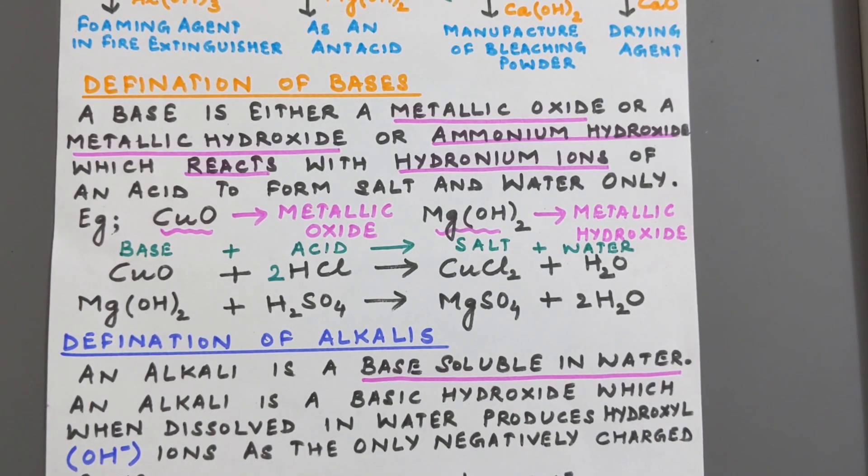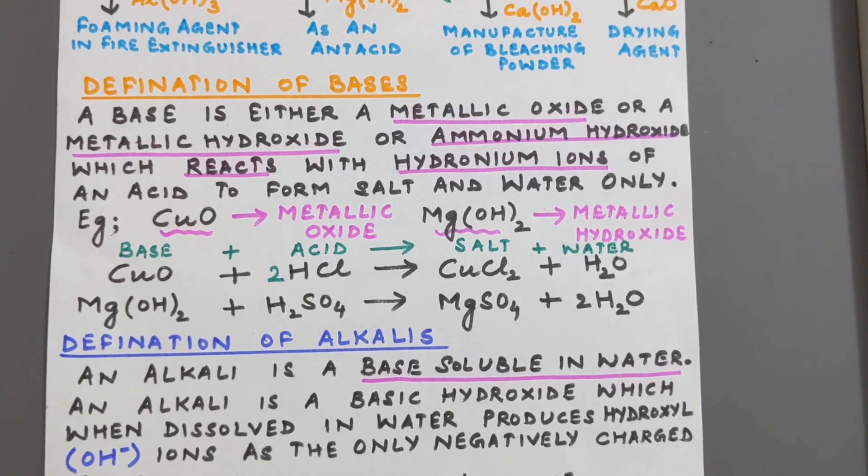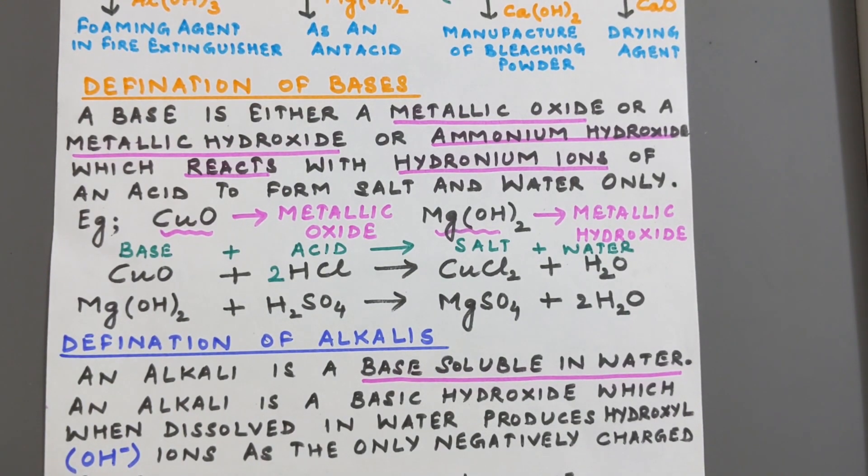We just discussed about acids. So acids are those which produce hydronium ions when they are dissolved in water. That means acids have hydronium ions.